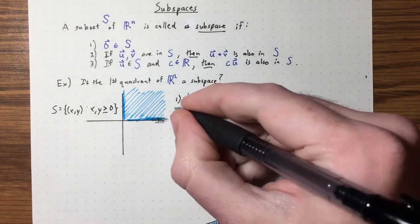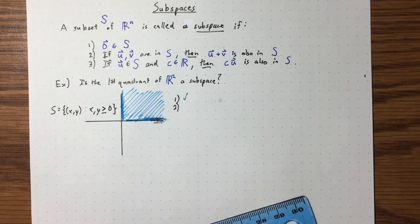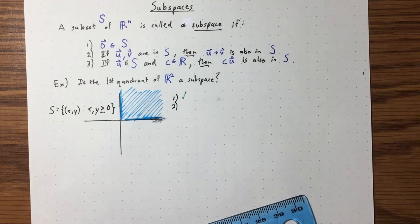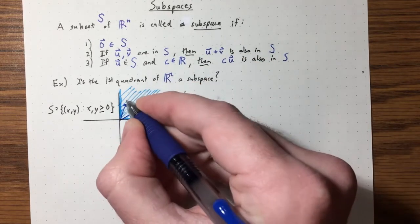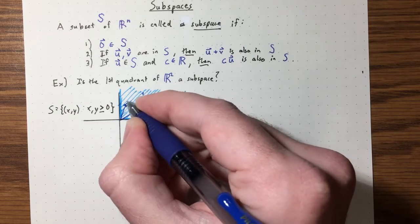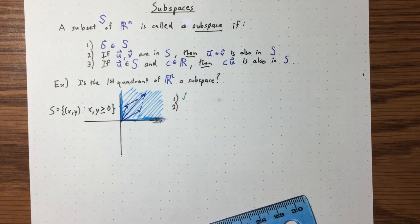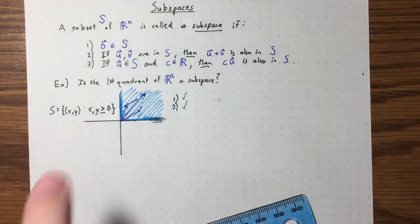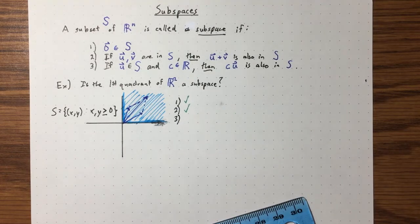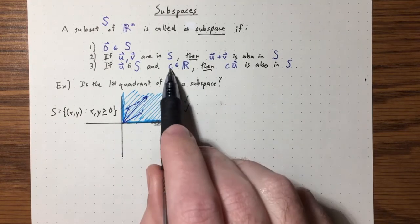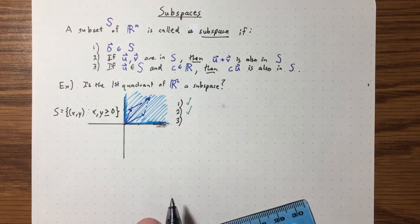How about condition 2? If I have two vectors in S, is their sum also going to be in S? You might be able to see that yes, that is going to be true — if I have a vector pointing one way and another vector pointing another way, their sum will also lie in the first quadrant. Condition 2 is also going to be true.